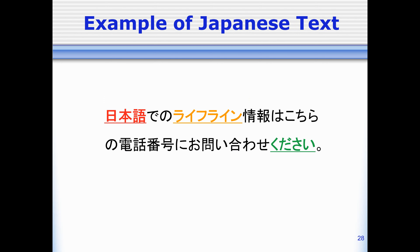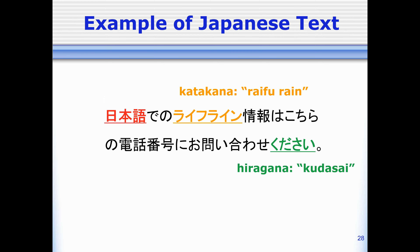So these simpler characters at the end — these are the hiragana. These ones in orange, the ones that sound like an English word, these are katakana.